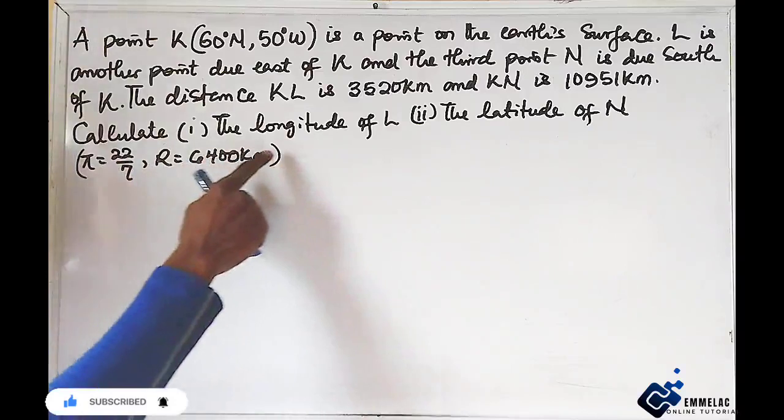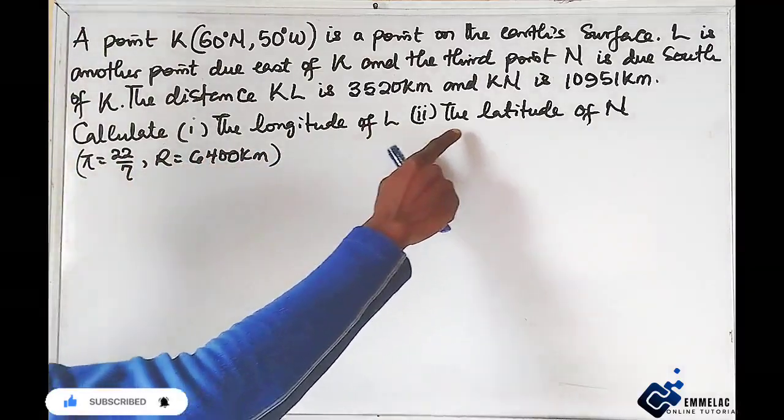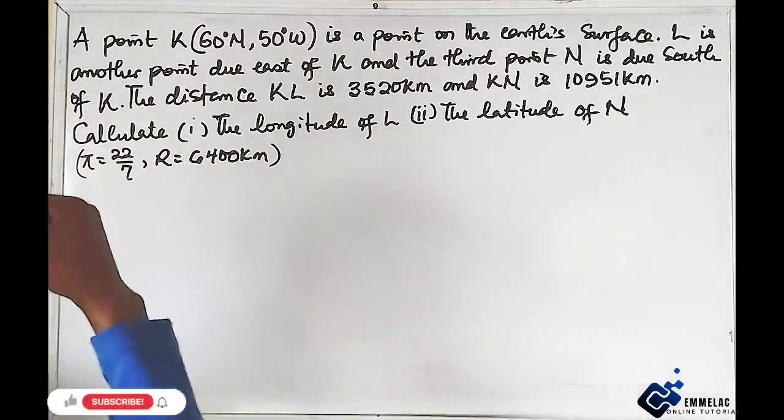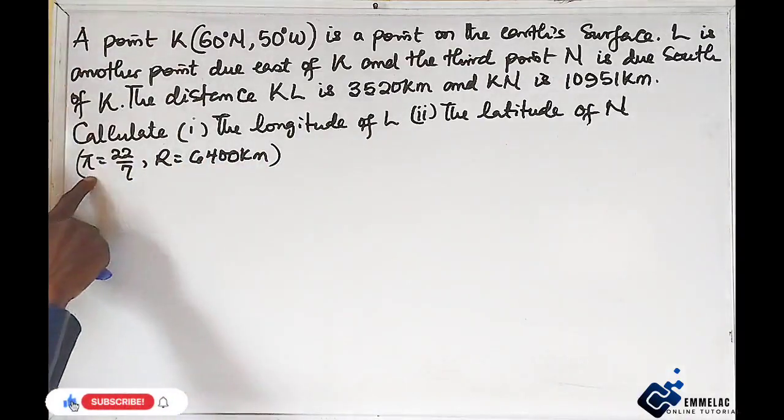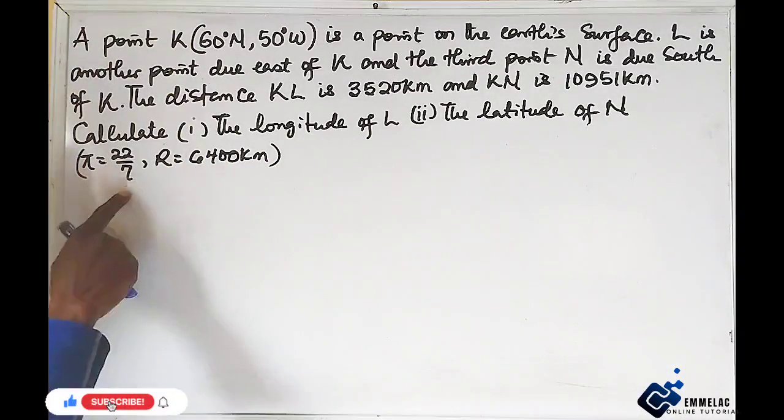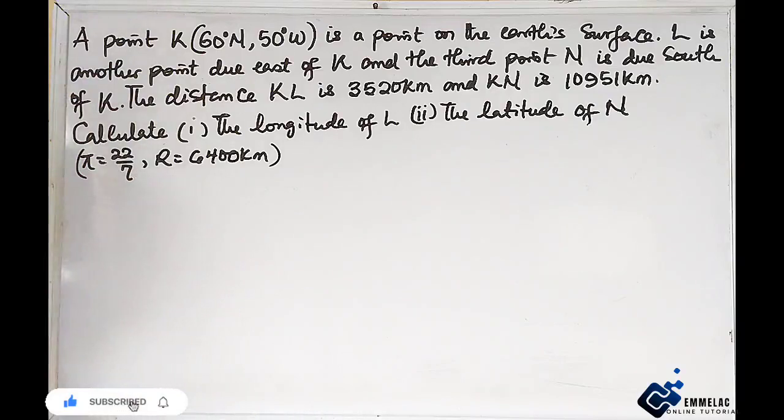The distance KL is 3520 km and KN is 10951 km. We are told to calculate the longitude of L and the latitude of N, given that pi equals 22 over 7 and the radius of the Earth is 6400 km.